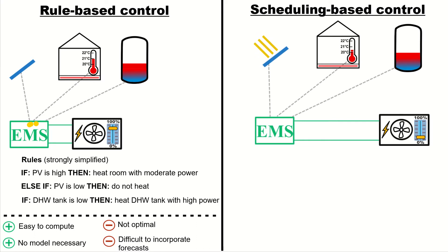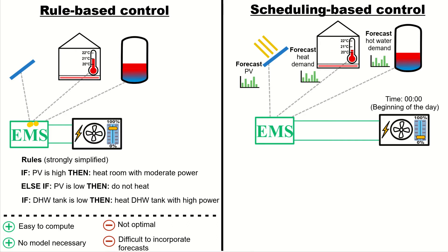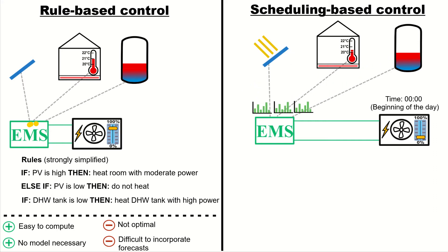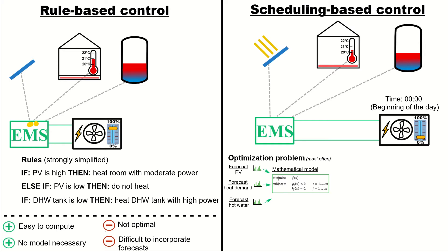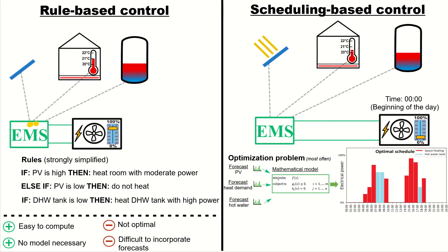Let's have a look at scheduling-based control. We have the same setup, but at the beginning of each day we generate a forecast of the PV generation, heat demand, and hot water demand — for example by using artificial neural networks. Then we collect these forecasts and run a mathematical optimization problem that includes a model of the building and hot water tank. The output is a schedule of the heating activities for the next 24 hours, specifying at what time which storage should be heated up with what power, and we successively follow the schedule's instructions.